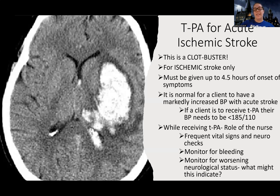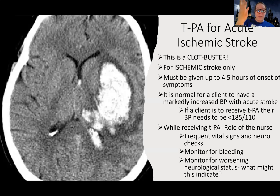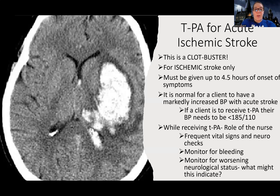The NIH stroke scale measures how many deficits a patient has after a stroke — we want that number going down, not up. If I'm giving a treatment that's supposed to make them better but their mental status is getting worse, that's a sign they may have burst a blood vessel and are now bleeding. This is called hemorrhagic conversion — someone starts with an ischemic stroke, receives TPA, but then develops a hemorrhagic stroke due to the medication's side effect.